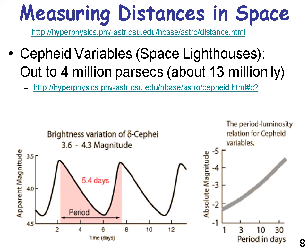Cepheid variables are very useful in understanding the size of the universe because we can measure out to about 13 million light years with them. A way to think of a cepheid variable is as a lighthouse. The brightness of a cepheid variable star varies — at one time it's brighter than another, and the period from bright to dim and back again is constant, as is the magnitude between each peak and trough.